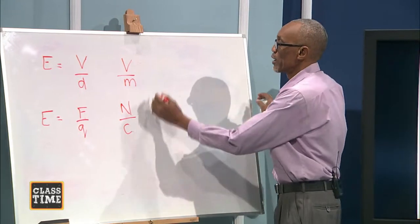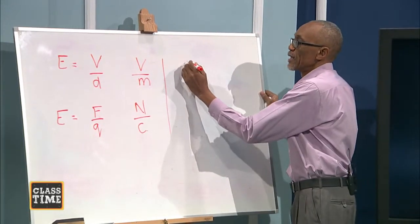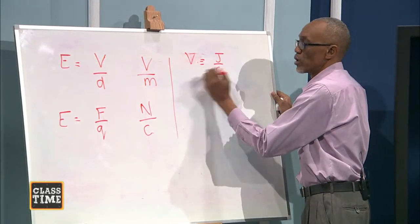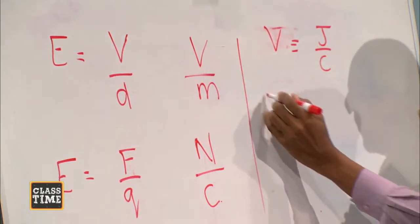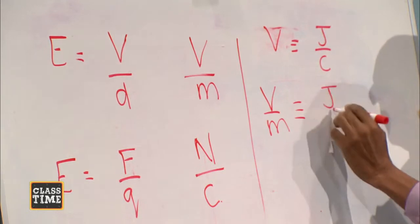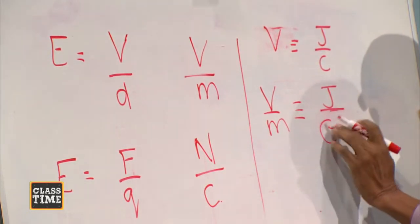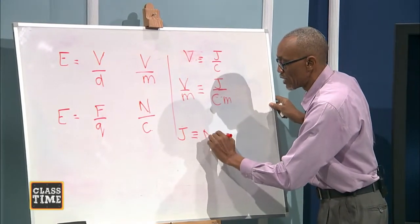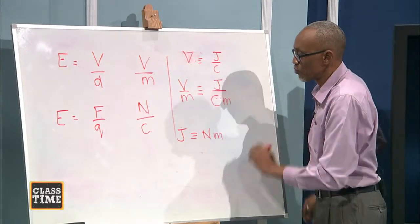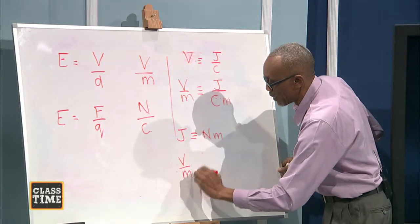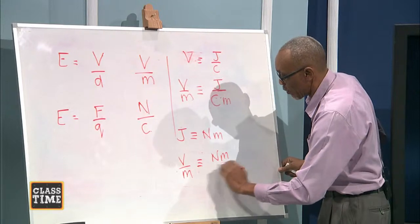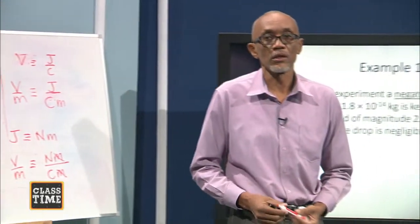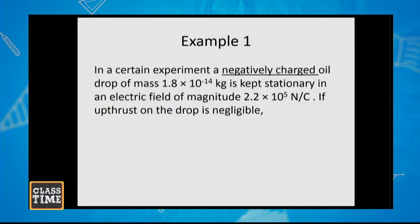Let's show that a volt per meter is the same as a Newton per Coulomb. One volt is a Joule per Coulomb, so volt per meter is equivalent to Joule per Coulomb meter. Now one Joule is equivalent to a Newton meter. So if we substitute for the Joule, we get that volt per meter is equivalent to Newton meter over Coulomb meter — the meters cancel, so one volt per meter is equivalent to one Newton per Coulomb. The units are consistent.